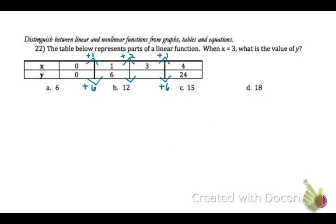On number 22, the table below represents parts of a linear function. So when x equals 3, what is the value of y? So remember with a linear function, as x increases steadily, y will increase or decrease steadily. So my first increase on x is 1, and then my first increase on y is 6. So that means for each increase of 1 in x, I need to increase 6 in y. So my next increase in x goes from 1 to 3, so that's 2. So I need to increase 6 for both of those, so 6 and 6. So I'm going to increase 12, which will give me 18. So the correct choice here is d, 18.